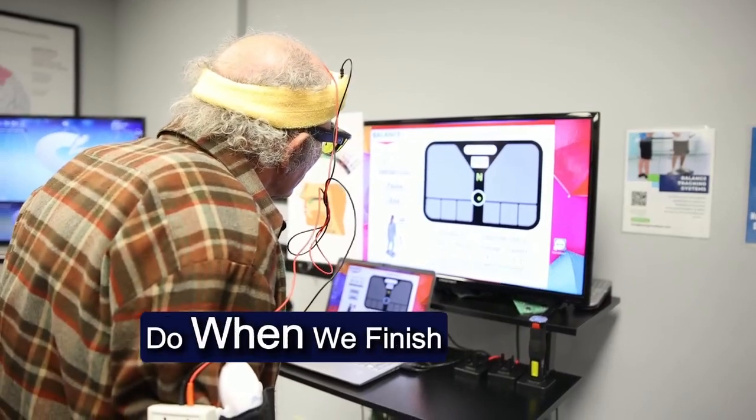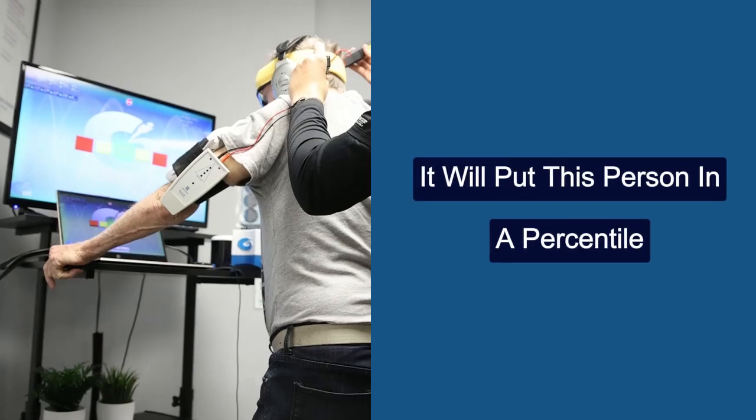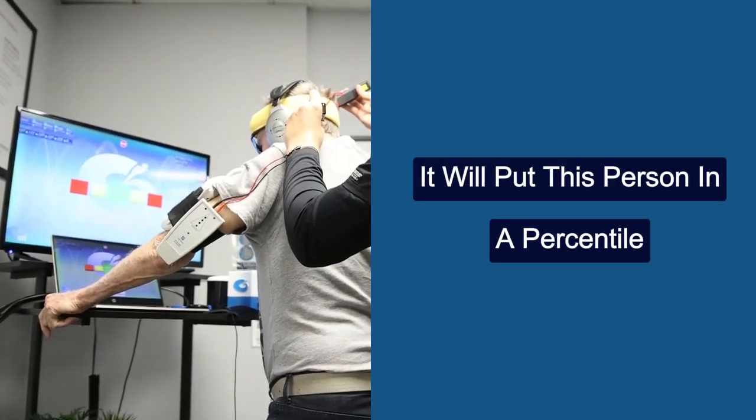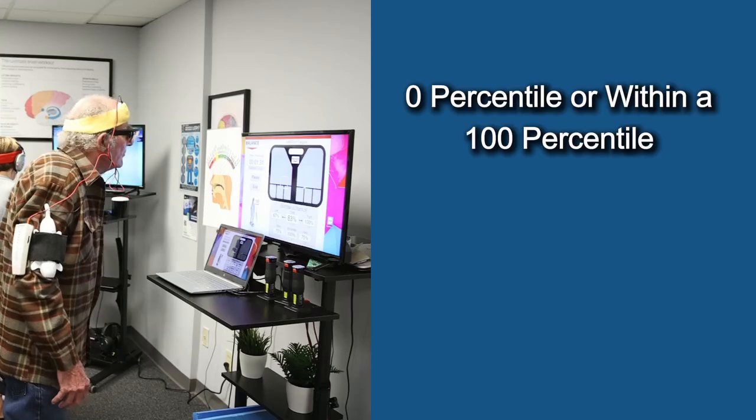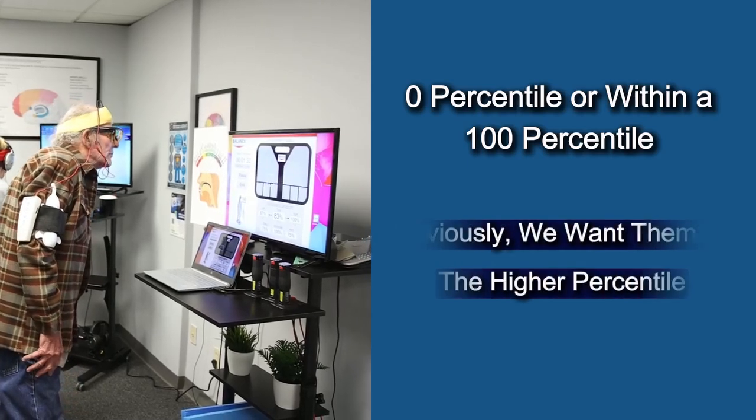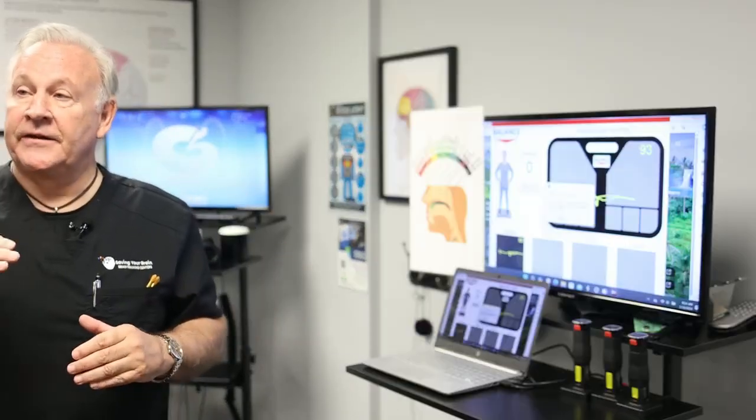What this will do when we finish, it will put this person in a percentile for their age and sex, zero percentile or in the hundred percentile. Obviously, we want them in the higher percentile. The higher, the better.